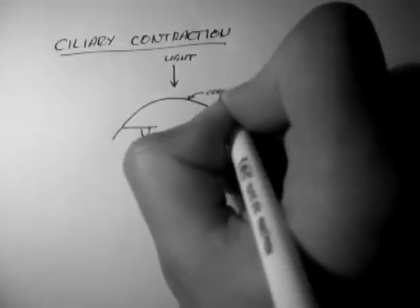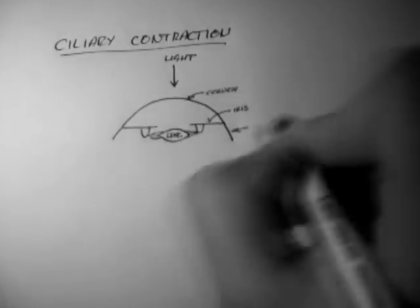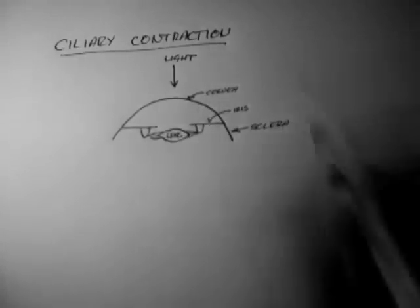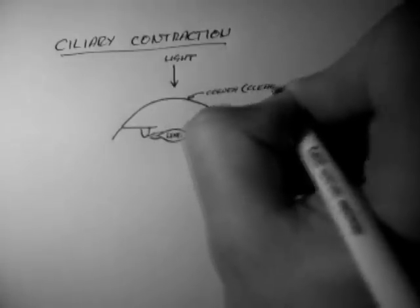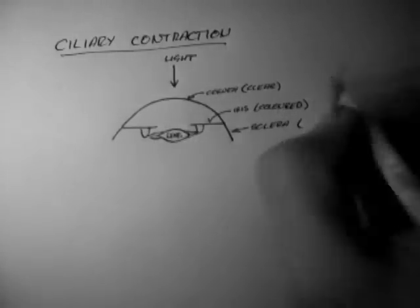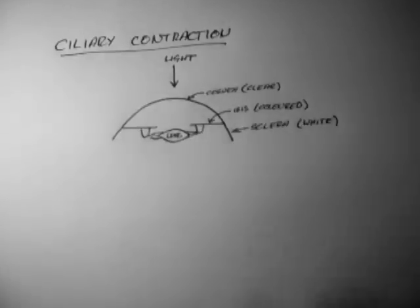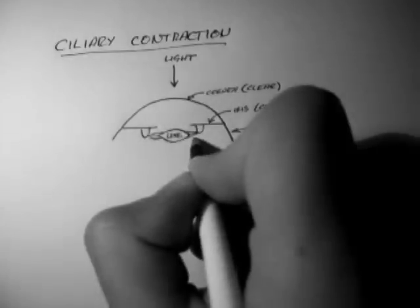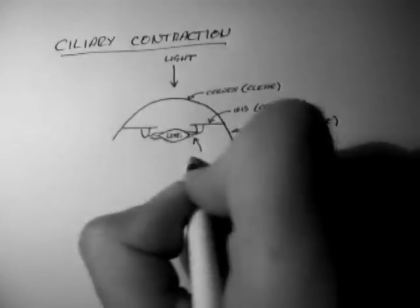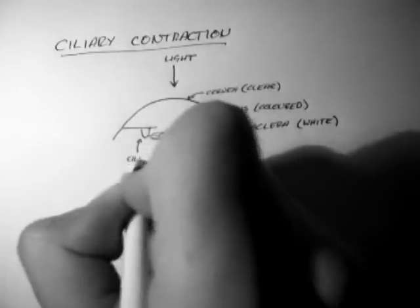Up here, this is the cornea, over here that's the iris, and down here is the sclera. The cornea is clear, the iris is colored, and the sclera is white. Now these little bands I spoke about, they're called zonules, and they're attached to the ciliary muscles.